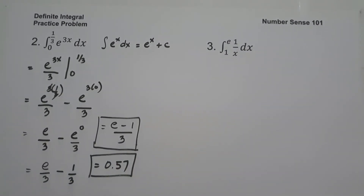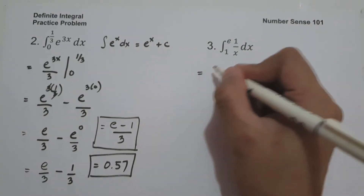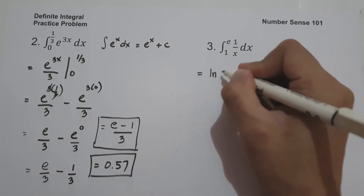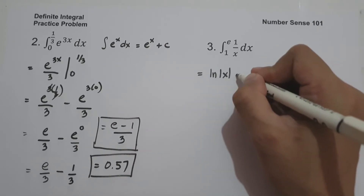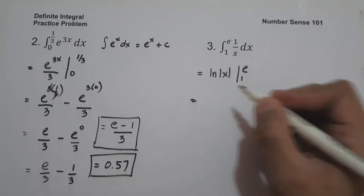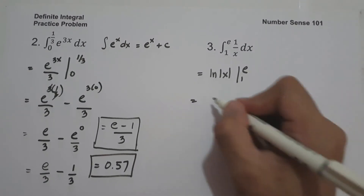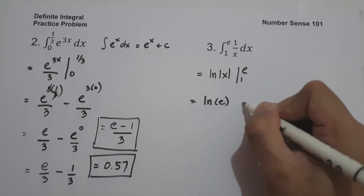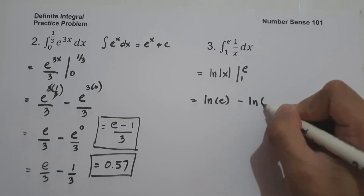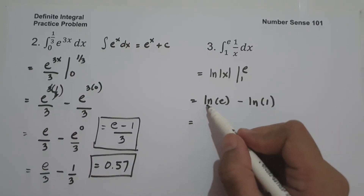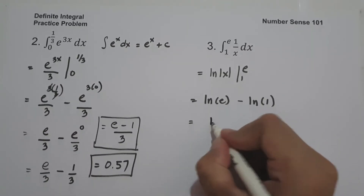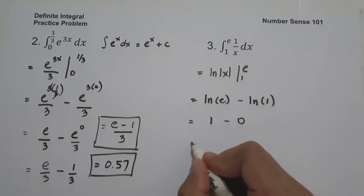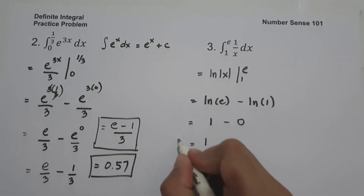On number 3, what is the antiderivative of 1 over x dx evaluated from 1 to e? The antiderivative of 1 over x is ln of the absolute value of x, evaluated from 1 to e. Substituting: ln of e minus ln of 1. Always remember ln e equals 1 and ln 1 equals 0. So therefore 1 minus 0 is 1. This will be our answer.